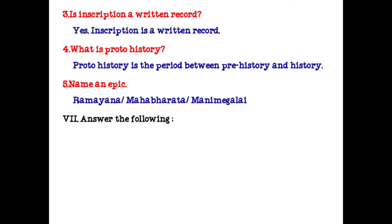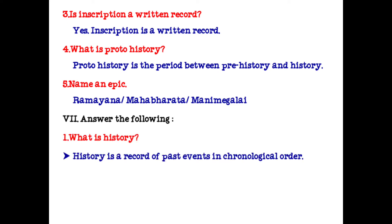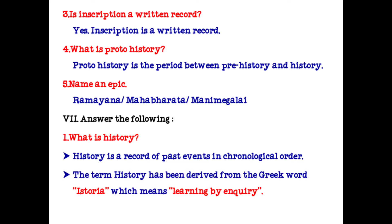Answer the following. What is history? History is a record of past events in chronological order. The term history has been derived from the Greek word 'historia', which means learning by inquiry.